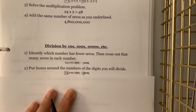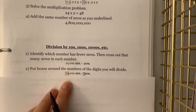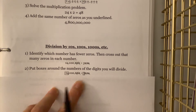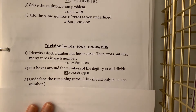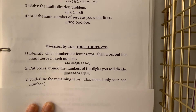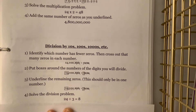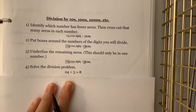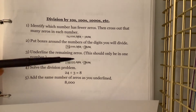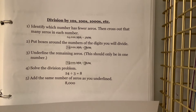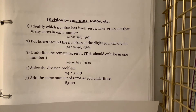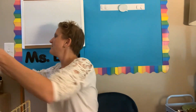Next, put a box around the digits you're going to divide — 24 and 3 — this is what we're going to divide. Next, you're going to underline the remaining zeros, and this should only be in one number if you did this correctly. In this case I underlined my three zeros. Now we can solve our division problem: 24 divided by 3 is 8. Finally, we're going to add back those three zeros — one, two, three — so our answer is 8,000. We should be able to solve these problems without doing long division. Keep these notes handy — they're going to guide us as we work on more practice.